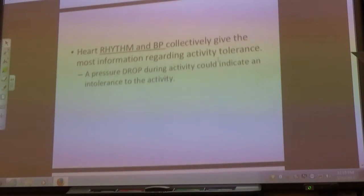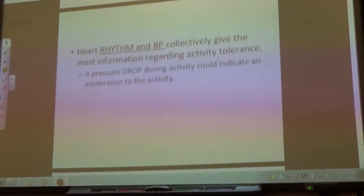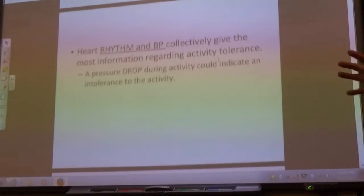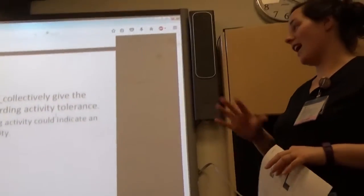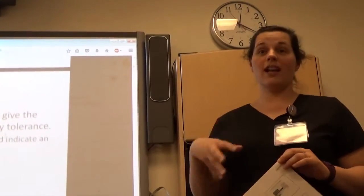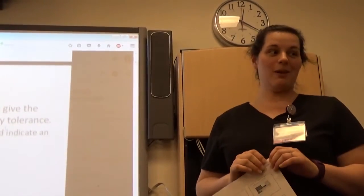I took some pearls of information from each course because they were each several hours long. One thing she said — when talking about a patient's activity tolerance, what do we typically look at? Here we look at oxygen a lot, we check heart rate, and usually we're talking about blood pressure with orthostatic changes. But she said heart rhythm and blood pressure are actually more adequate in giving you information regarding how the patient is tolerating activity. That really struck me.